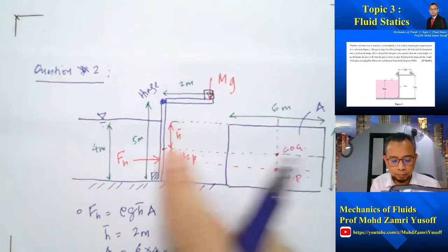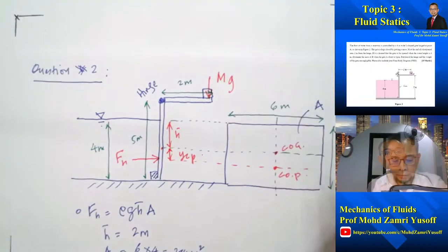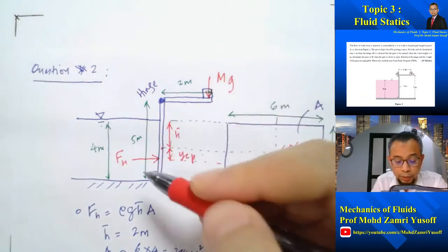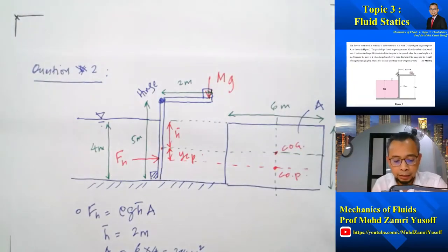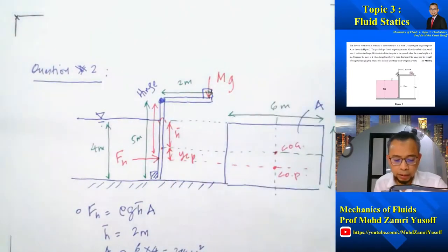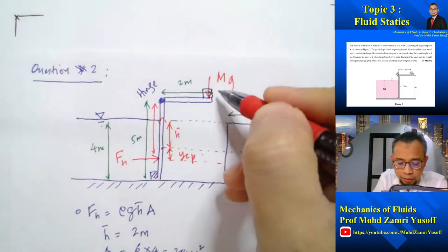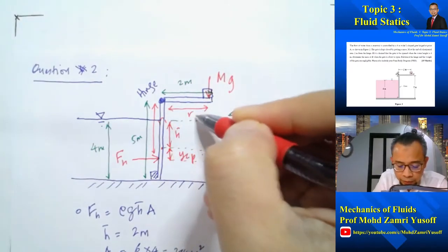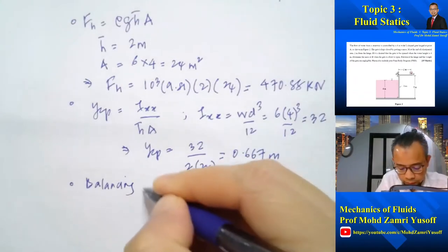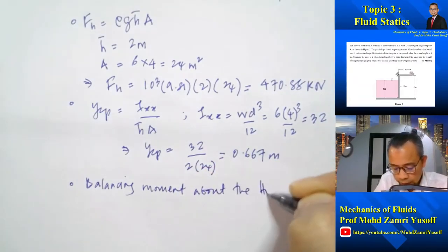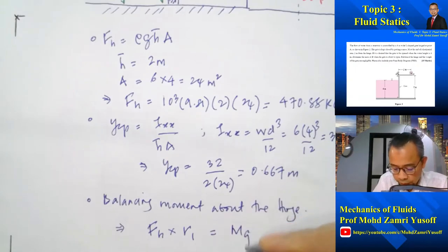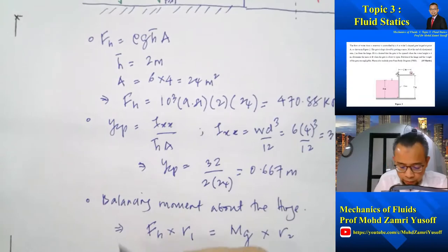Then in order to obtain M, as I mentioned earlier, the moment has to be balanced. So the hydrostatic force will create a moment in the anticlockwise direction which will be equal to FH multiplied by this arm, I call that one R1. And then the weight will create a moment equal to Mg multiplied by this arm, I call this R2. So balancing moment about the hinge, I must have FH multiplied by R1 equal to Mg multiplied by R2.